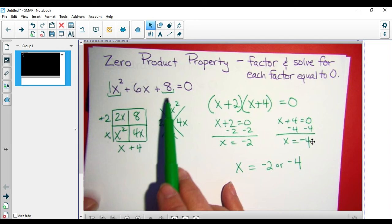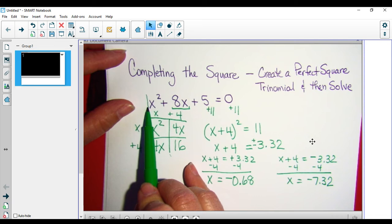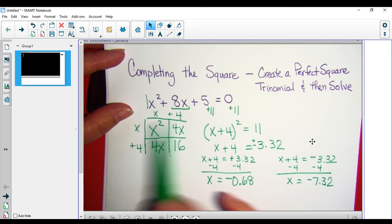If I don't think I'm going to be able to factor it, and I have a leading coefficient of 1, and my x term is even, I might try completing the square.